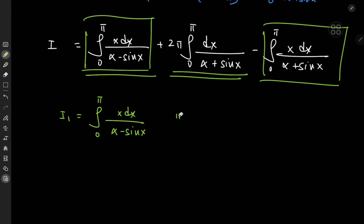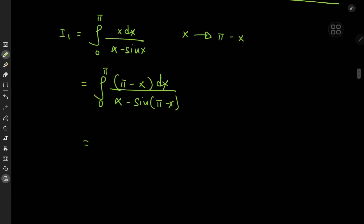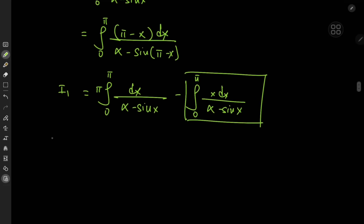A phase shift means going from the x realm to the π - x realm, which gives the integral from 0 to π of (π - x) dx divided by (α - sin(π - x)). Since sin(π - x) = sin x, using linearity this becomes π times the integral from 0 to π of dx over (α - sin x), minus I₁. So this equation implies that I₁ equals π/2 times the integral from 0 to π of dx divided by (α - sin x).